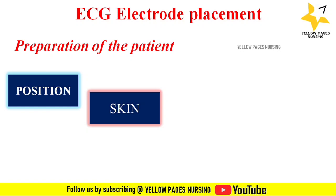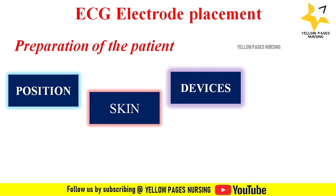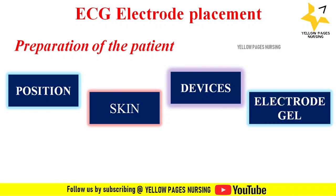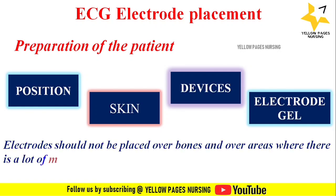Electrical devices such as mobile phones should be kept away from the patient as they may interfere with the machine and cause changes in the ECG reading. Electrode gel should be moist, as it acts as a coupling between the electrodes and skin to aid transmission of electrical activity. Electrodes should not be placed over bones or over areas with a lot of muscle movement, as this may create unwanted electrical activity.